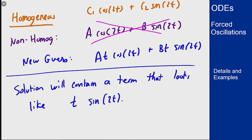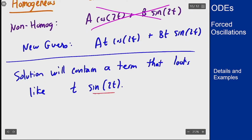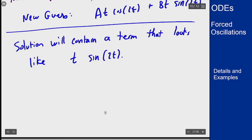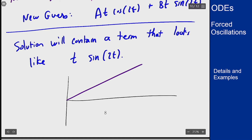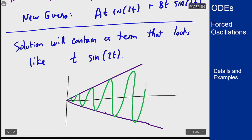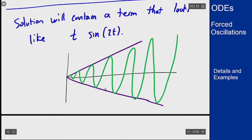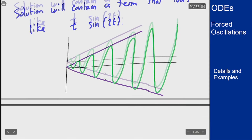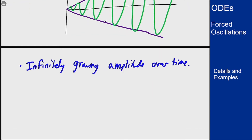Now what does that graph look like? That graph is a sine curve that oscillates but now with a growing amplitude of t. So in terms of a sketch, we have the graph of y = t, and our solution is going to oscillate between these and get bigger and bigger as time goes on. This has infinitely growing amplitude over time. This doesn't necessarily make sense physically, so the model is probably going to break down at some point.